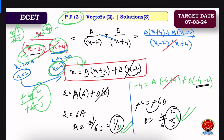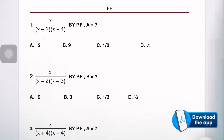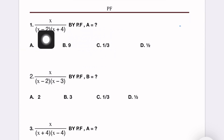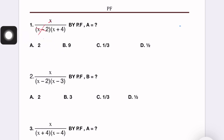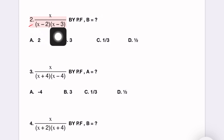This method makes 2-mark questions easy. If you have any questions, you can clarify. The first practice question is x by (x minus 2)(x plus 4) — find by partial fraction. For the first factor, x equals 2 gives 2 by 6 equals 1 by 3. Next question: x by (x minus 2)(x minus 3) by partial fraction, where b equals 2.